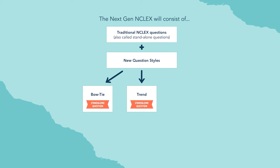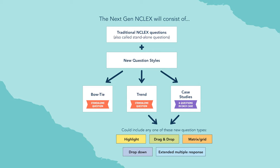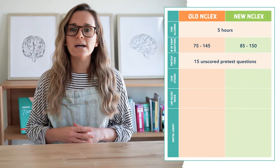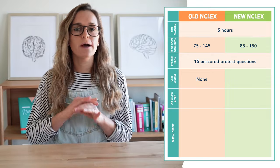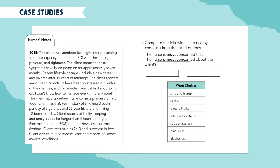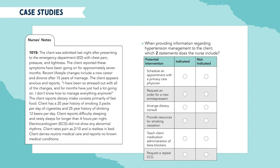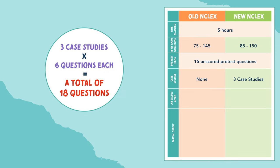They are also introducing a new question style called case studies. Within case studies and trend questions, there are new question types: highlight, drag and drop, matrix and grid, drop-down, and extended multiple response. The old NCLEX did not have any case studies, but this next-gen NCLEX will. Each student, no matter how many questions you're shown, will get three case studies on your exam, and each case study has six questions or item types. Three case studies times six questions each equals a total of 18 questions — just a small portion of your exam.